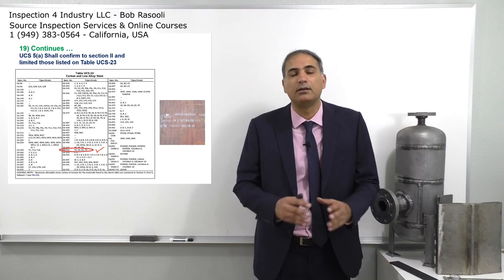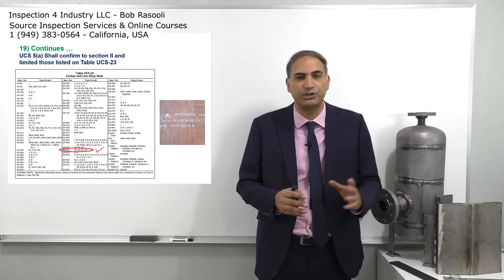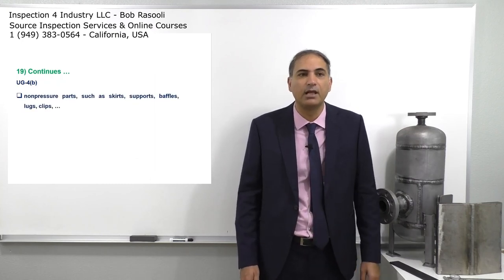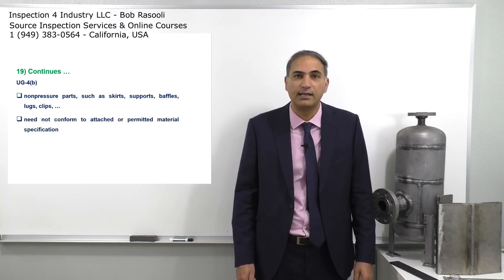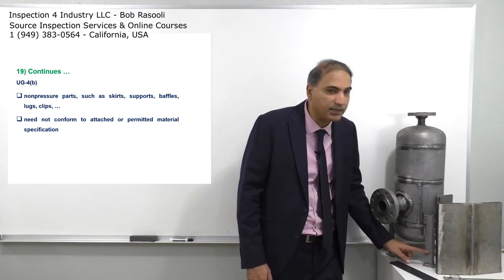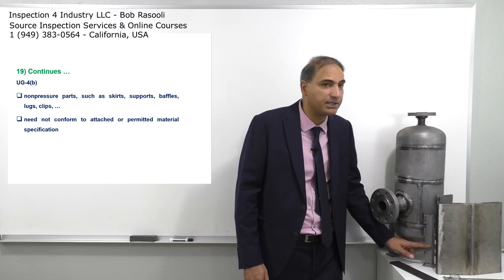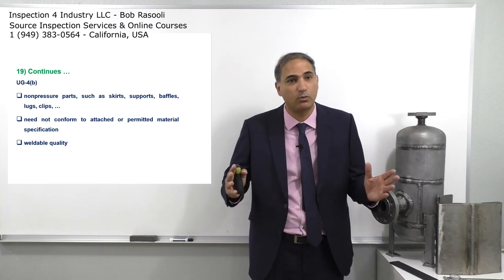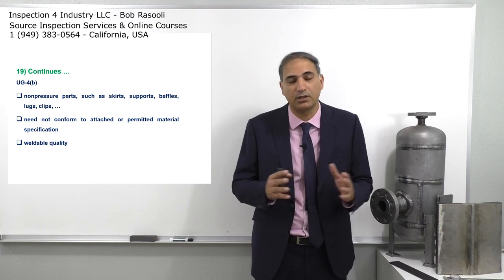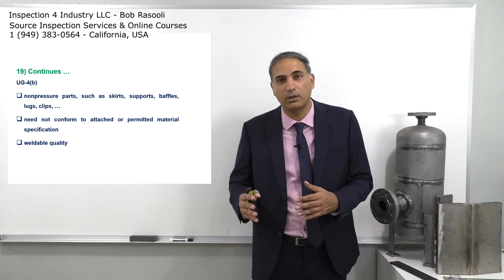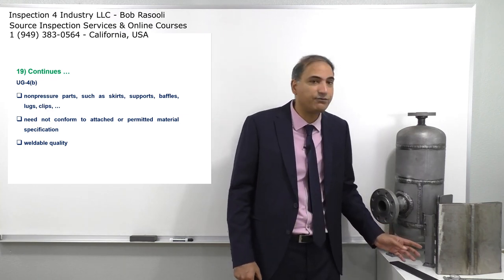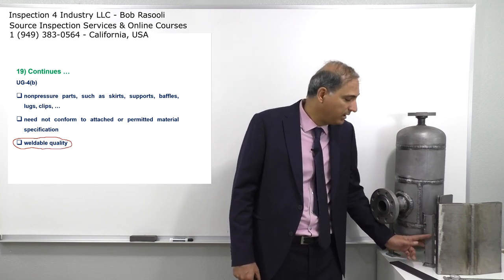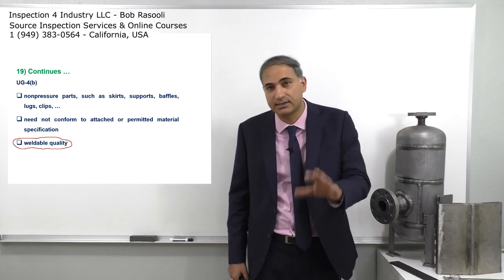Now let's look at another material requirement in UG. UG-4B says non-pressure parts such as skirts, supports, baffles, lugs, and clips need not conform to the permitted material specification. So if I have support legs, they don't necessarily need to be an allowed pressure vessel material, but they do need to be of weldable quality. We'll explain in coming segments what 'weldable quality' means, but the key point here is that non-pressure parts can use other materials as long as they have weldable quality.